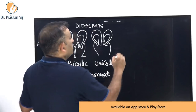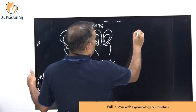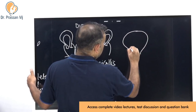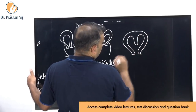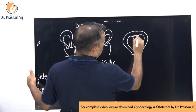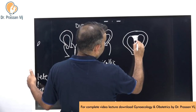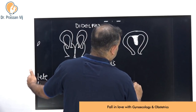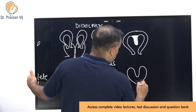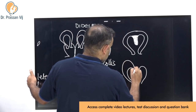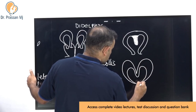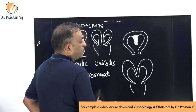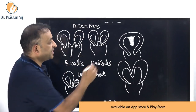Or the uteruses have fused but the intrauterine septum has not been absorbed — that is a septate uterus. Or the uterus has not fused properly at all — that is a bicornuate uterus.